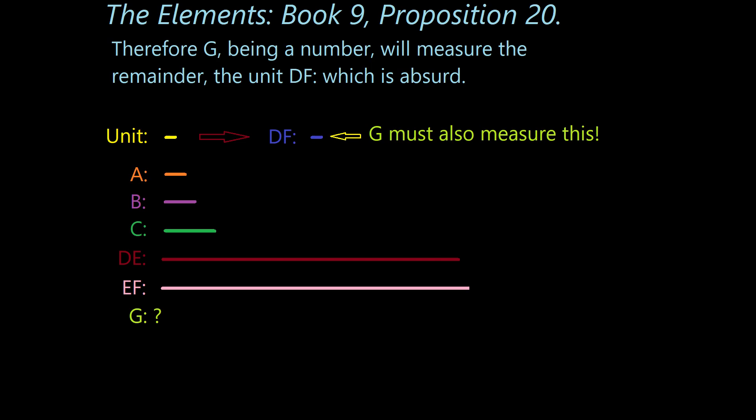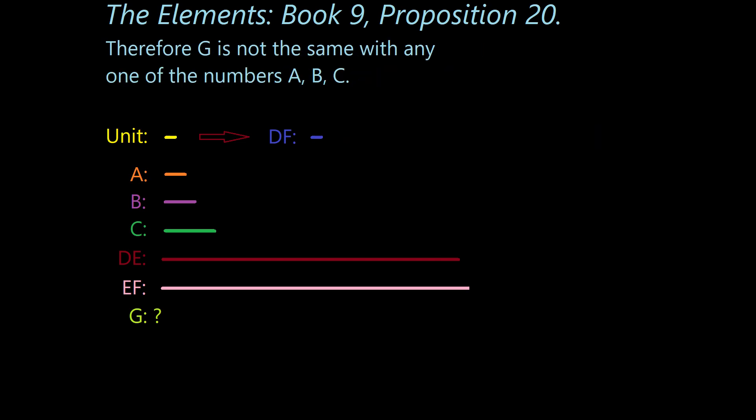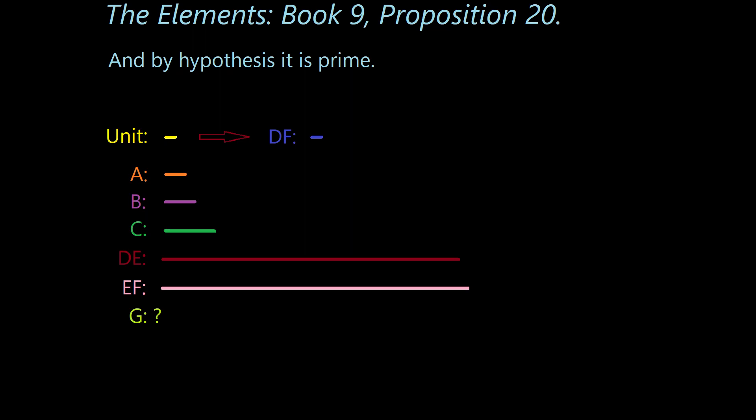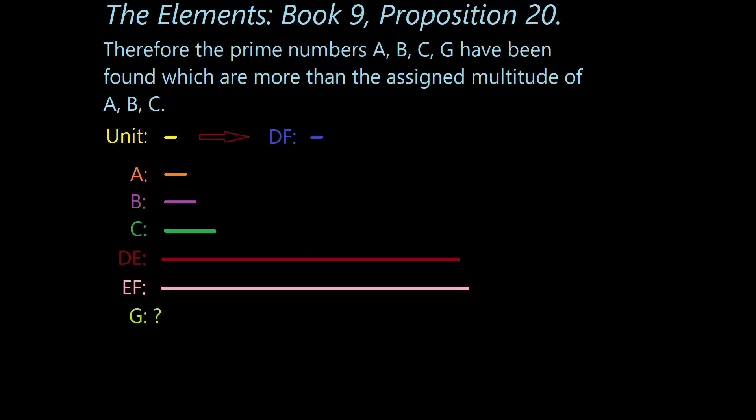And this brings us to the conclusion of the argument. Therefore, G is not the same with any one of the numbers A, B, C. And by hypothesis, it is prime. Therefore, the prime numbers A, B, C, G have been found, which are more than the assigned multitude of A, B, C. And that is the final line of the proof.